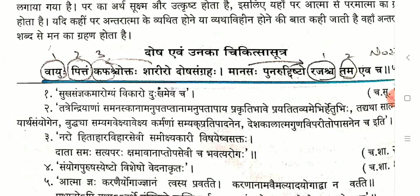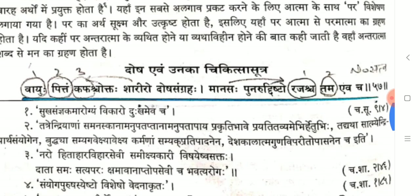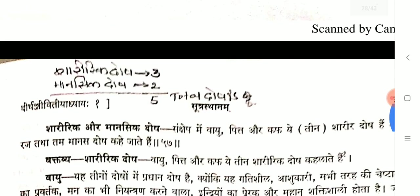Now we will see the Doshas of Sharira. Vata, Pitta and Kapha are Sharirika Dosha; Rajas and Tamas are Manasika Dosha. On this basis a tricky question may form. If the question asks for total Doshas of Sharira, the answer is 3 — Vata, Pitta and Kapha. If the question asks total Doshas without specifying Sharira or Manas, the answer should be 5.